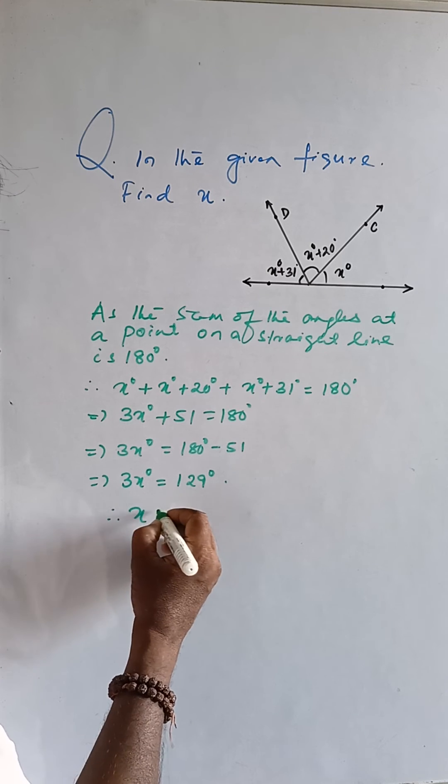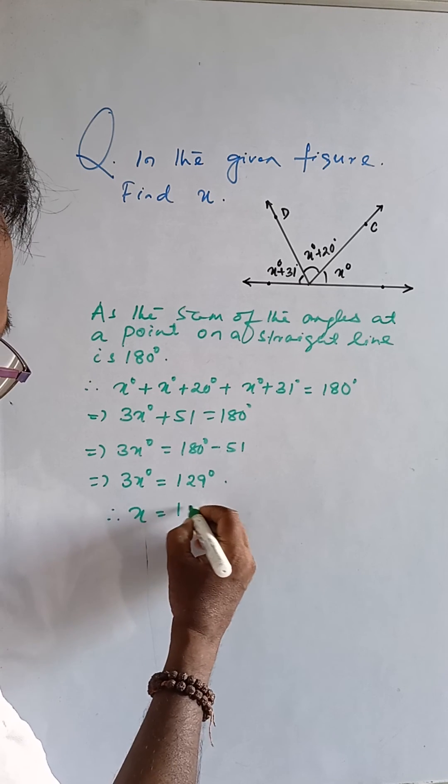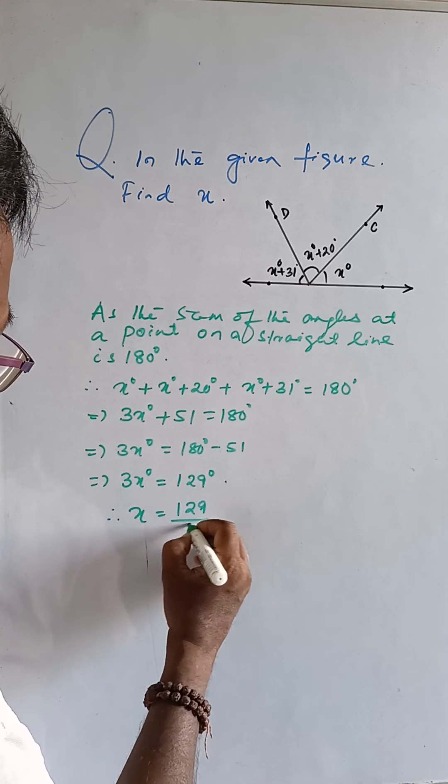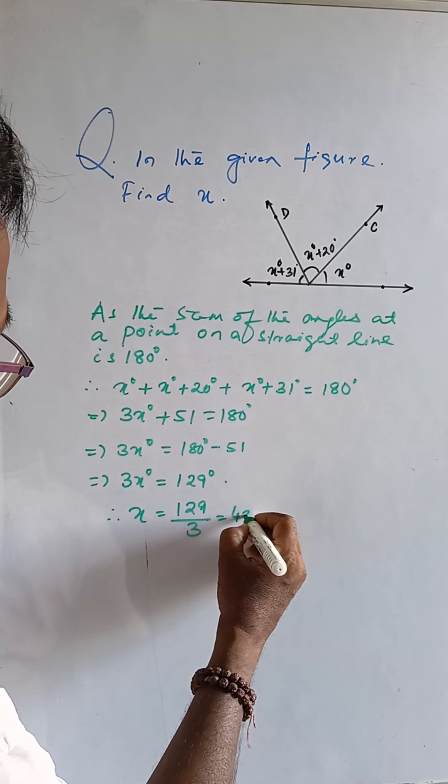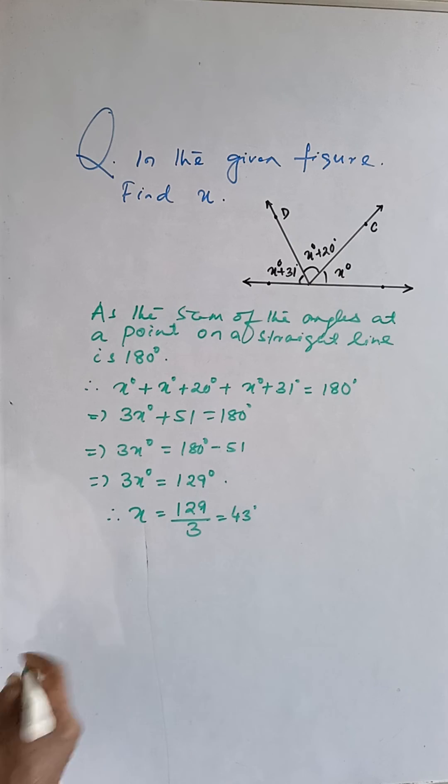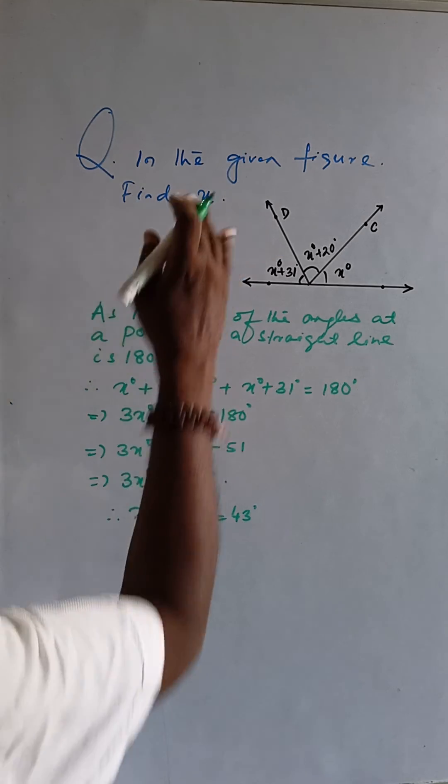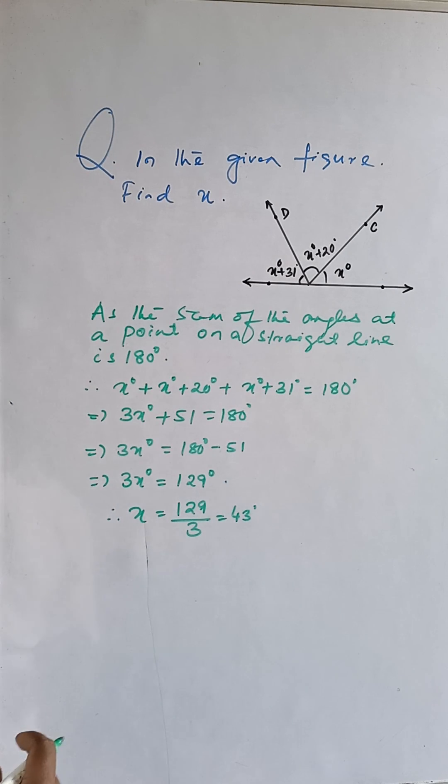Therefore, x is equal to 129 divided by 3, which is 43. So the value of x is equal to 43 degrees. Thank you.